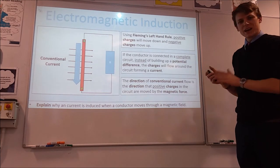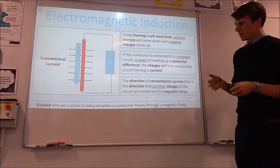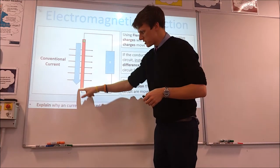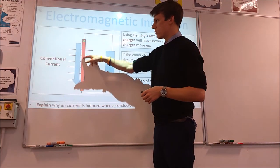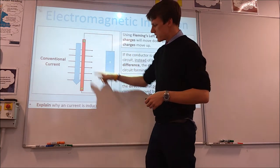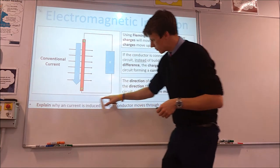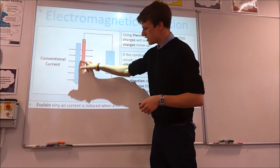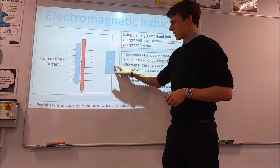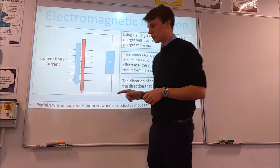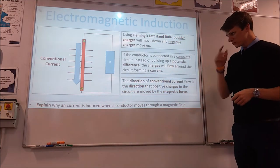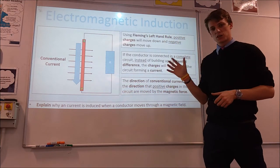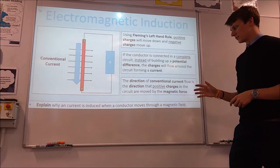If we now connect the wire into a circuit, we don't get a build-up of charge anymore. Positive charges are still forced one way and negative charges the other, but instead of stopping at the end they're now free to go around and complete the circuit. So our conventional current would be going around in the direction that positive charges would travel.